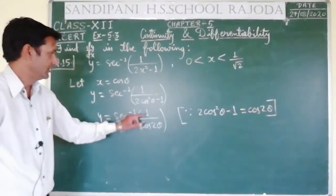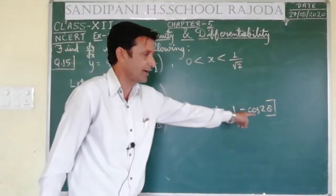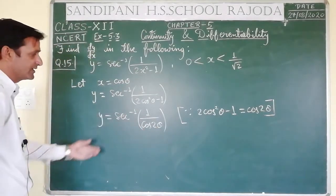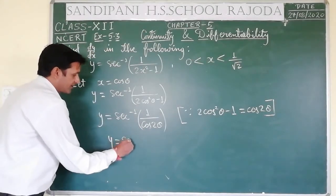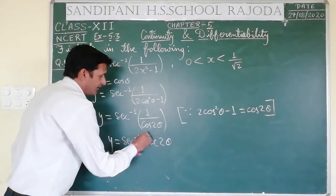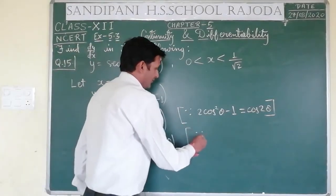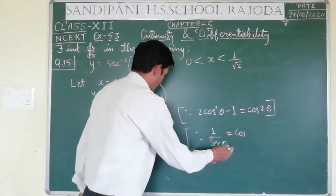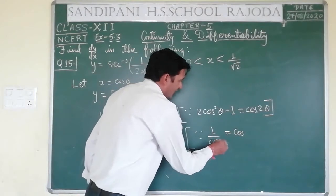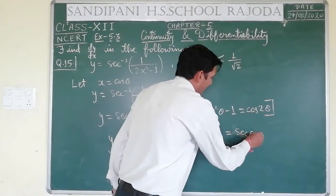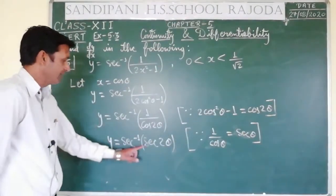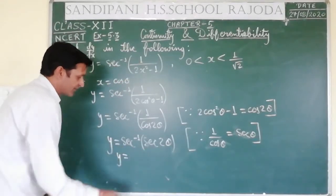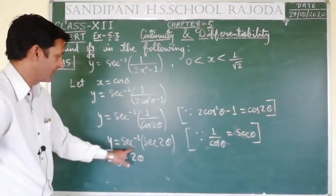We have considered that one formula is applicable: 2cos²θ - 1 = cos 2θ. Due to this, 1/cos 2θ = sec 2θ. So y = sec⁻¹(sec 2θ). We applied the formula: 1/cos θ = sec θ, so cos θ का reciprocal sec θ होता है। यह sec⁻¹(sec 2θ) के form में आ गया — now we can write it as y = 2θ, because sec⁻¹ and sec cancel out, leaving 2θ.